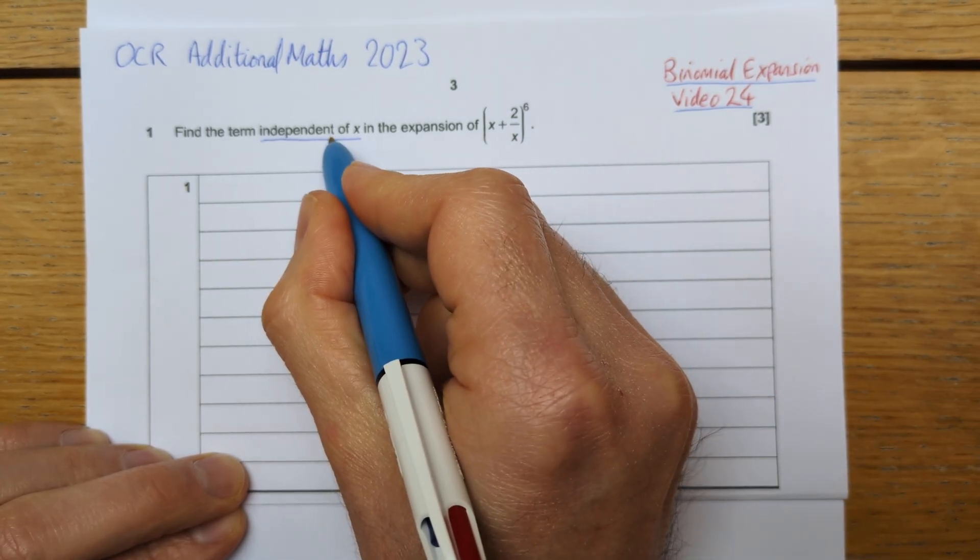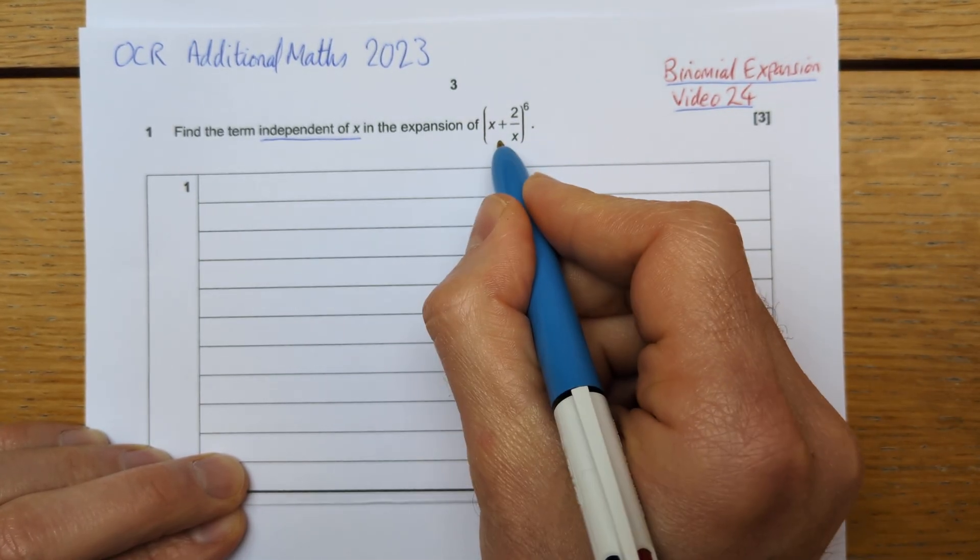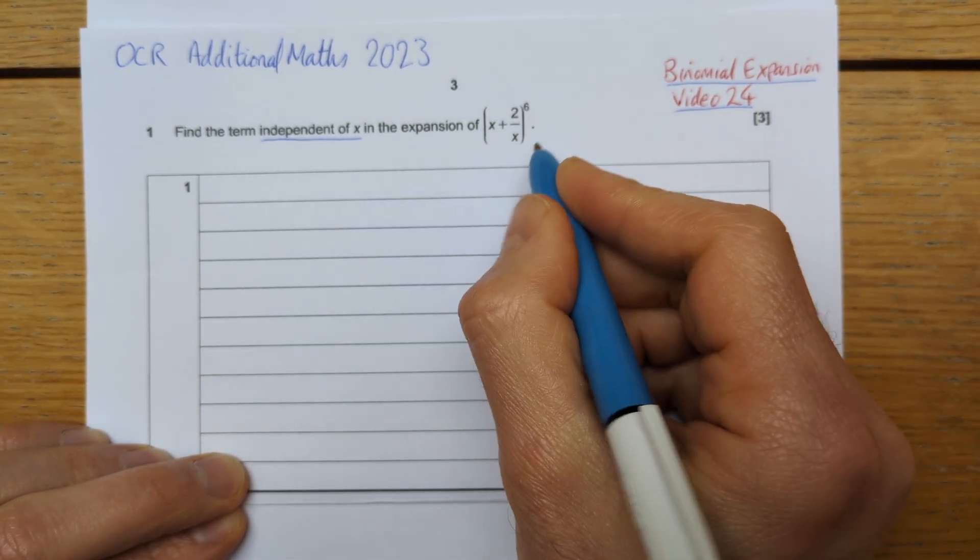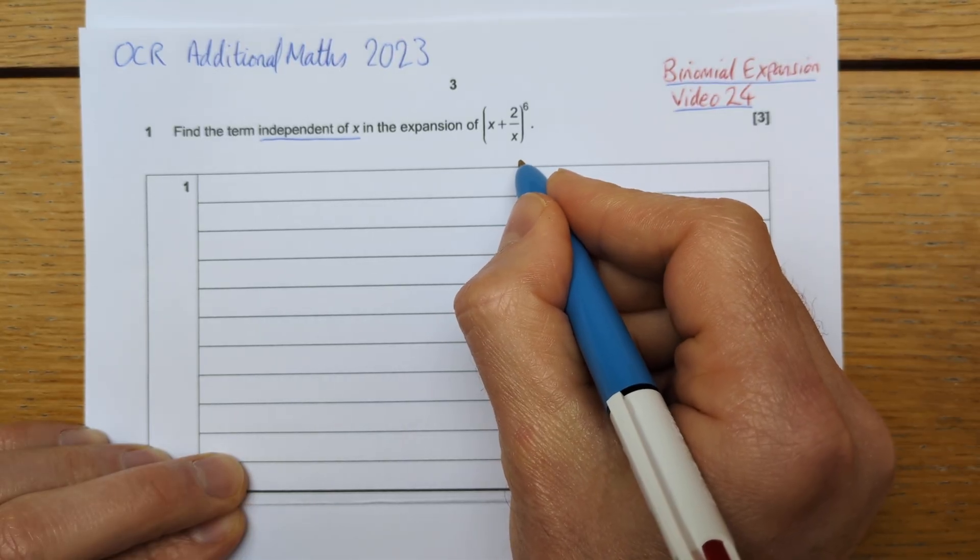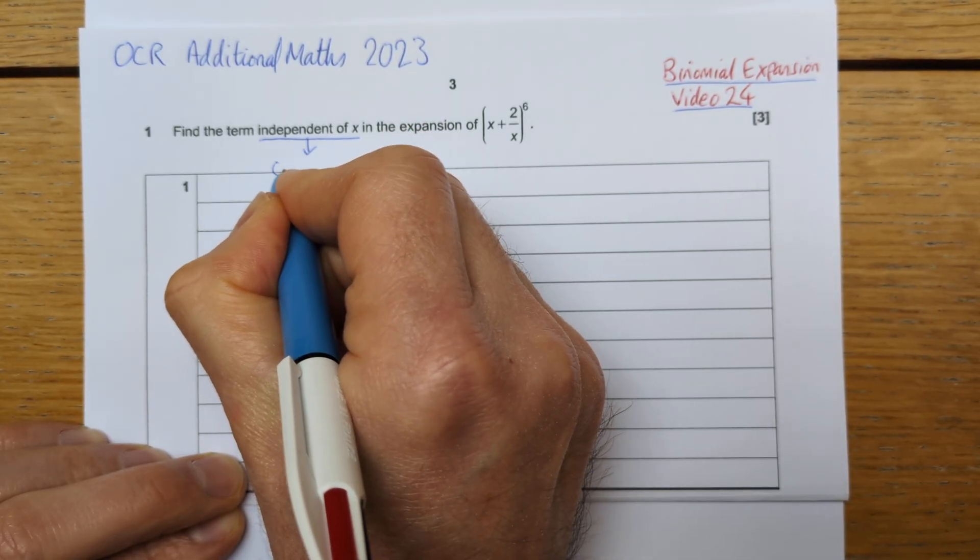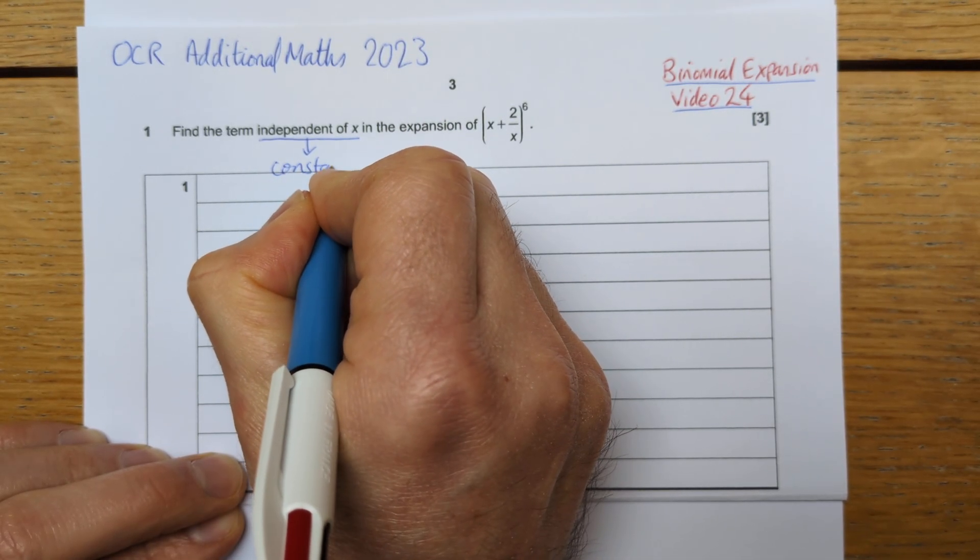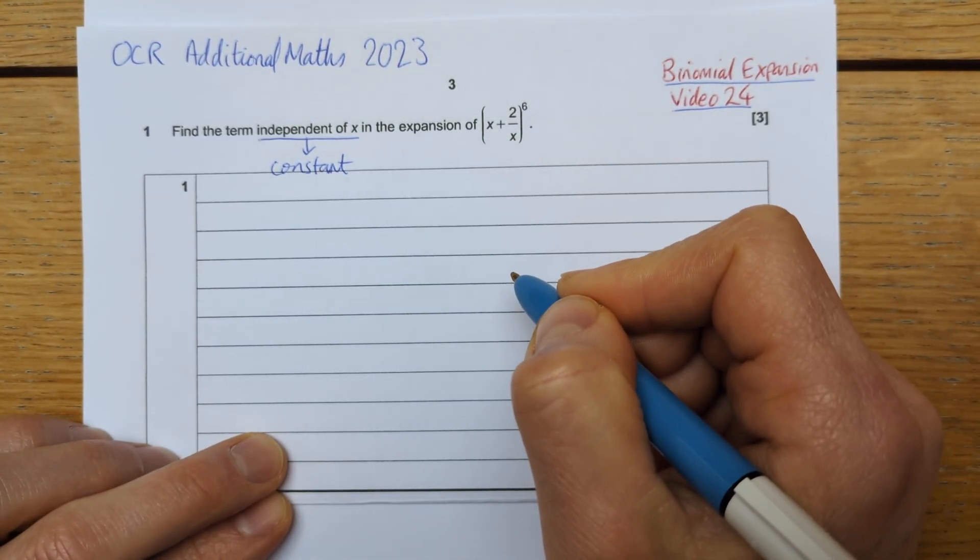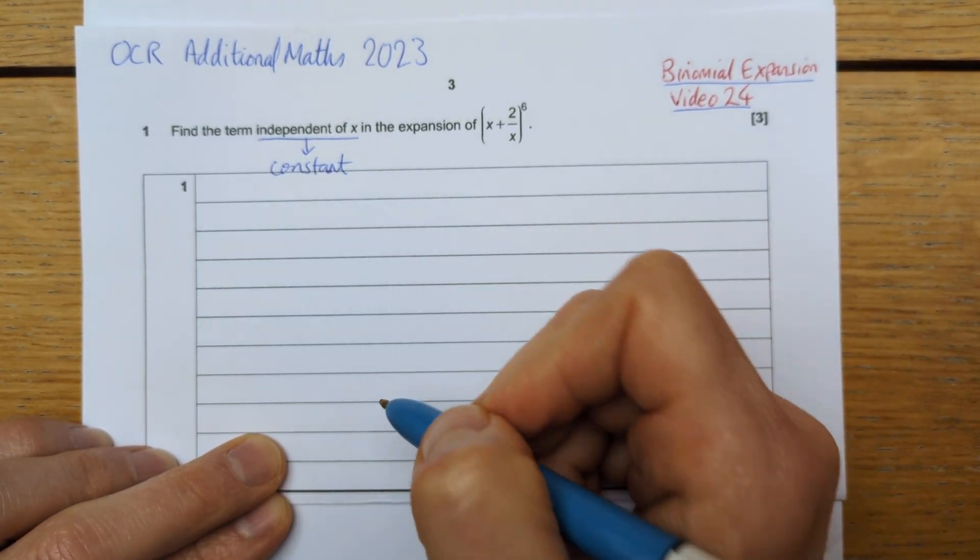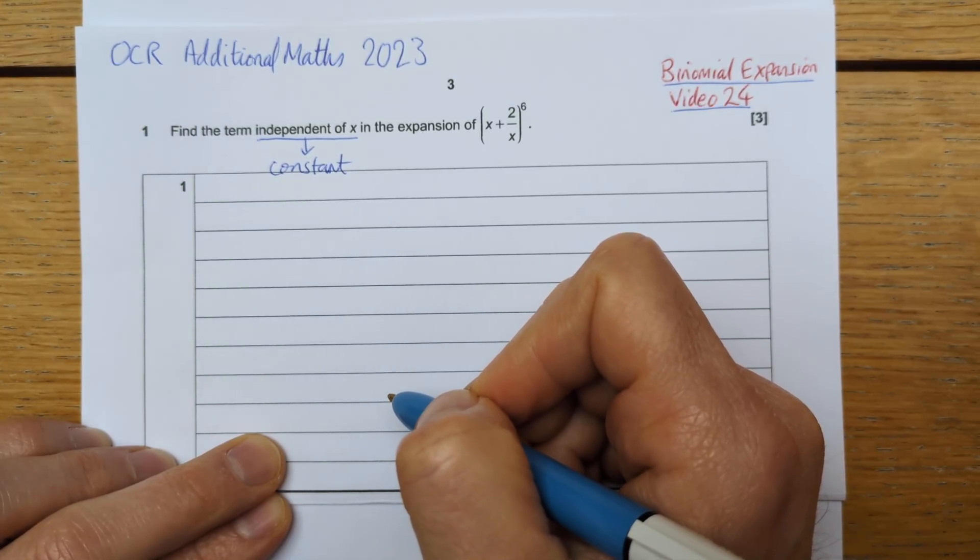If I want the independent term of x in this expansion, I want the term that is effectively a constant. So the independent of x is a constant. It has no x to the power of anything on it, it's just a number. So like 7 would be a term independent of x because it doesn't depend upon the value of x.